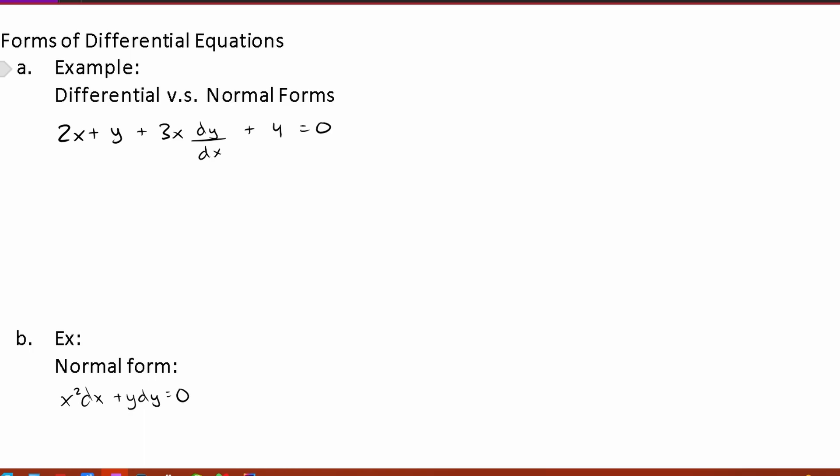So what is differential form? Differential form, we'll do this one first, it's where we have our dx and dy separate. So to explain this we're going to multiply everything by dx. Multiplying everything by dx you're going to get 2x dx plus y dx plus 3x dy. Notice how dy and dx which were previously together are now separated and this is going to be equal to zero.